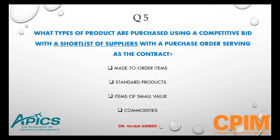Question number 5. What type of product is purchased using a competitive bid with a short list of suppliers, with a purchase order serving as a contract? Options: made-to-order items, standard product, items of small value, or commodities.